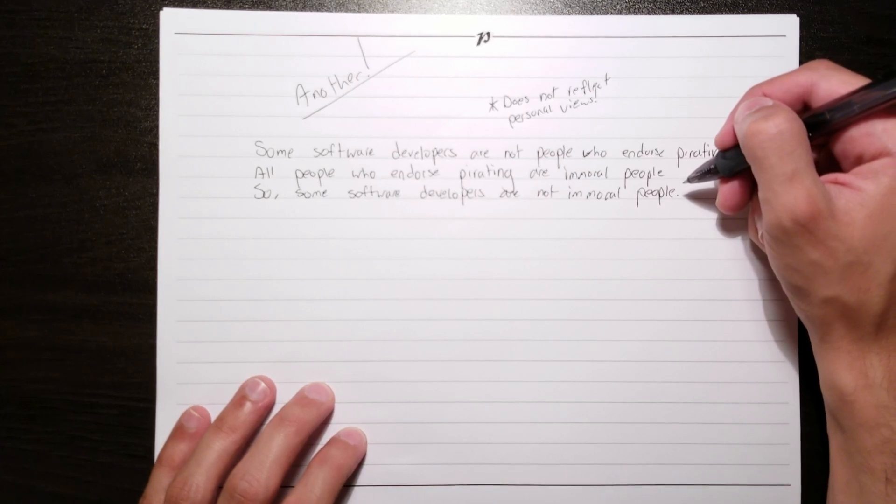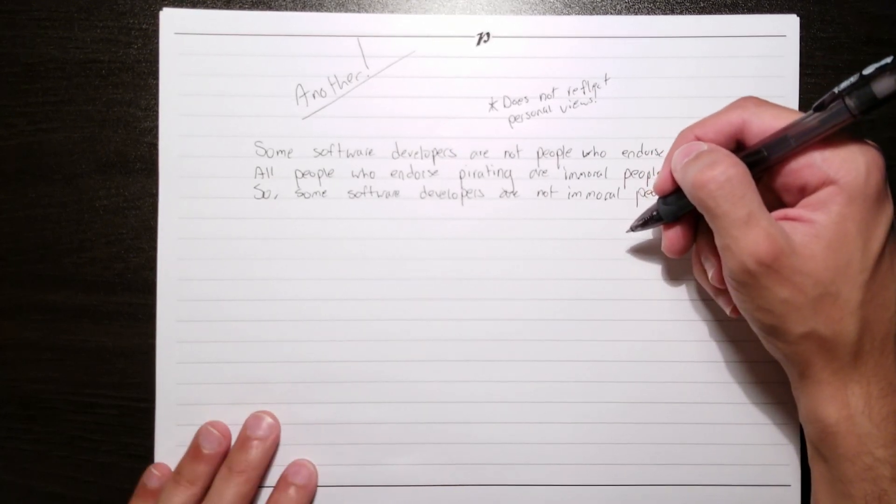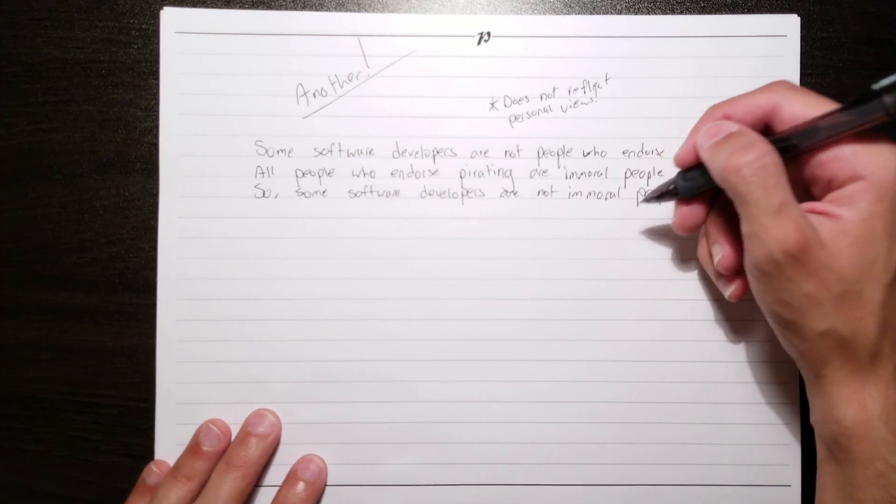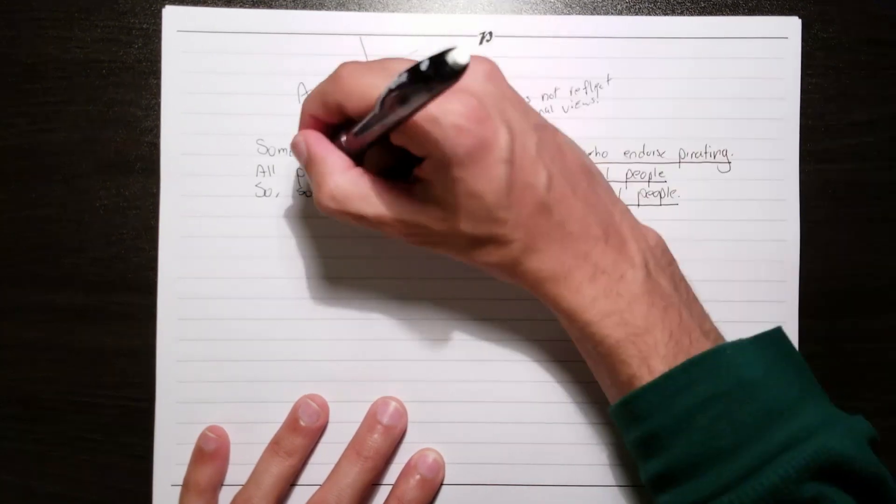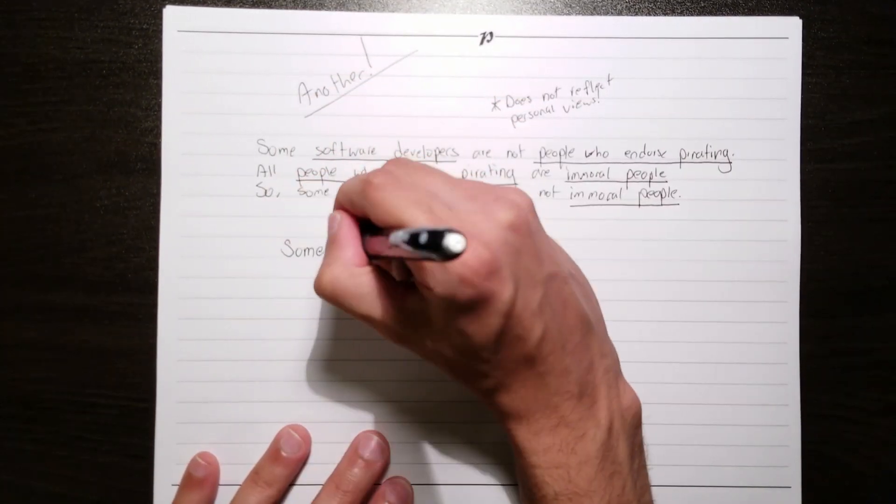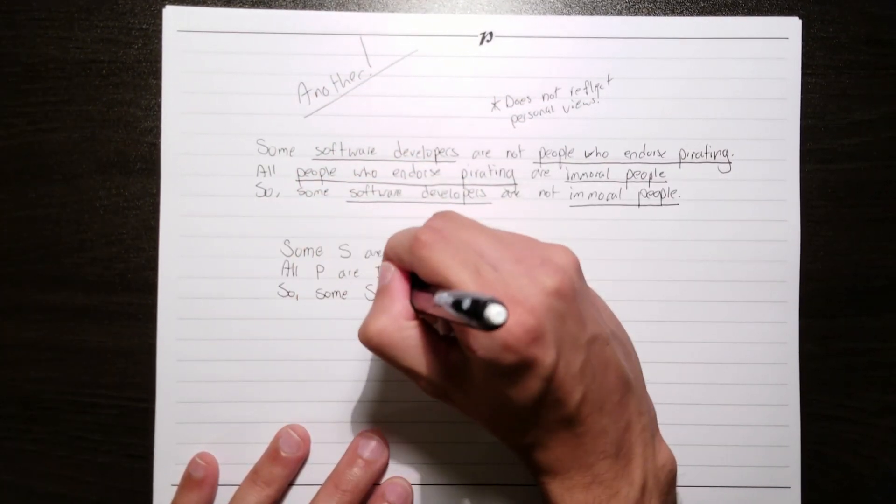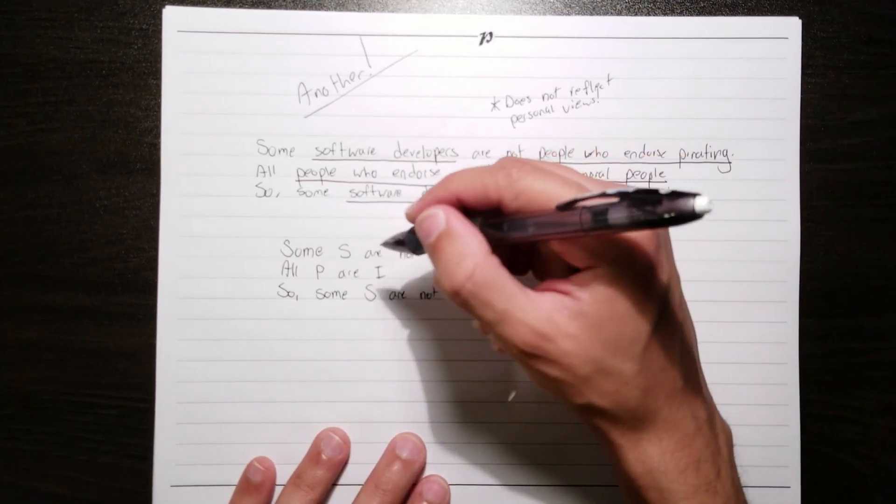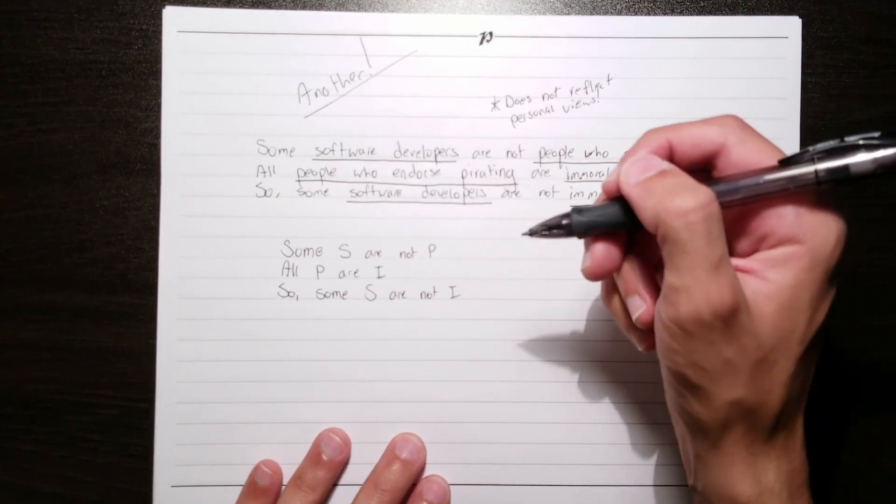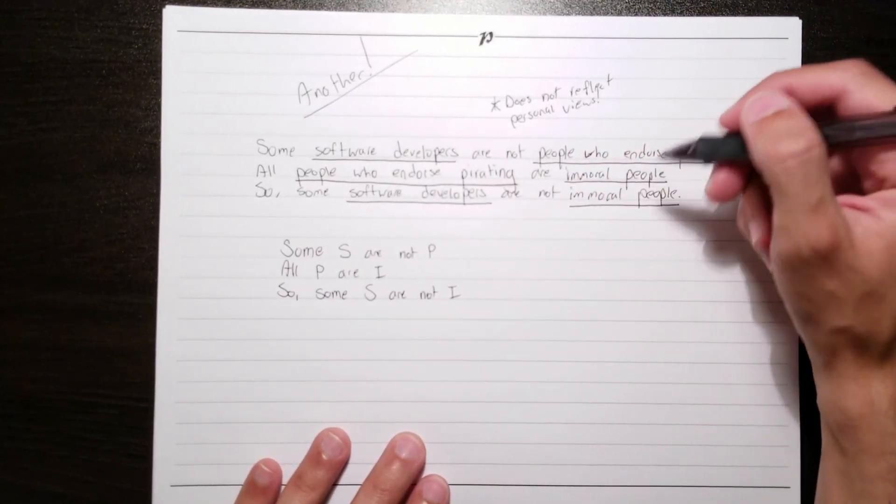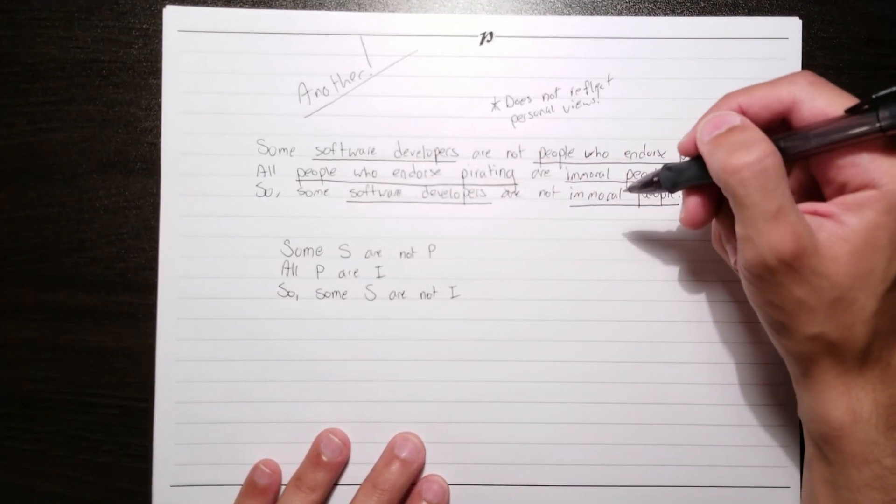Given that we normally believe this conclusion to be true, it might be tempting to think that this is a valid argument. But let's go ahead and construct a counterexample to see if that's true. Let's underline all of the content just to make it easier on the eyes. And now let's go ahead and write the form of the argument. Let's see what we've got. Some s are not p, all p are i, so some s are not i. This is much easier on the eyes than this mess that we've got going on up here.